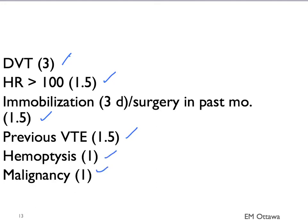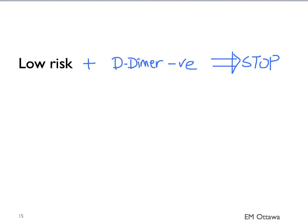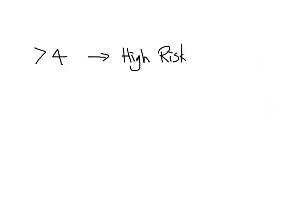Then we tally up the score. There are different ways to interpret the score. In a patient with 4 or less than 4 as the total score, the patient is deemed low risk for PE. If they have more than 4 on the Wells score, they are deemed high risk. If the patient is low risk, we can use the D-dimer to help us. If the patient is low risk by the Wells score and their D-dimer is negative, our workup for PE stops here. If the patient is low risk but their D-dimer is positive, they need to go on for further confirmatory imaging.